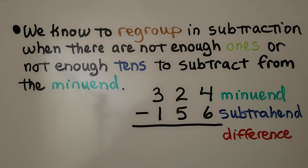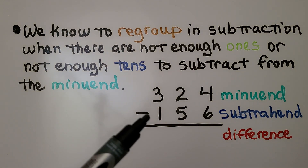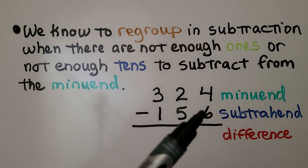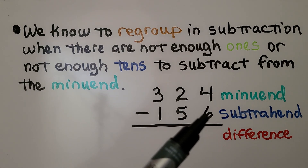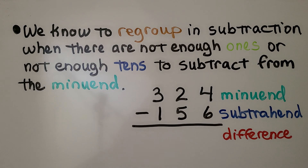We know to regroup in subtraction when there are not enough ones or not enough tens to subtract from the minuend. The top number is the minuend, we're taking away the subtrahend, and the answer is the difference. We have four ones and we want to take away six ones, so we would need to regroup. Here we have two tens and we want to take away five tens, so we would need to regroup. Let's see how to do this problem.